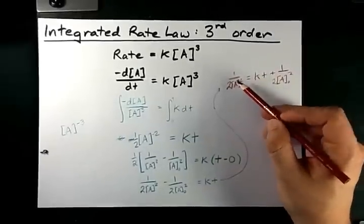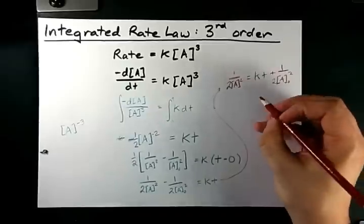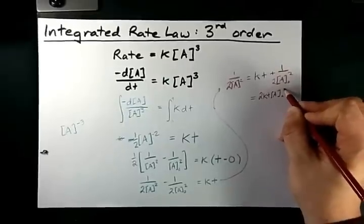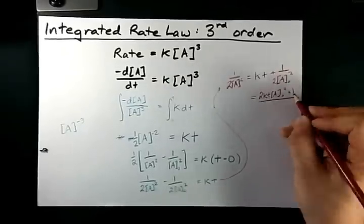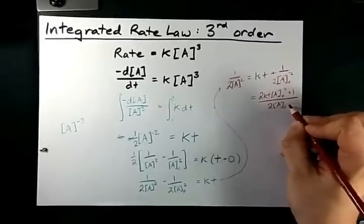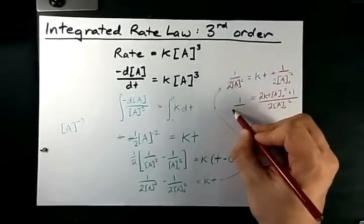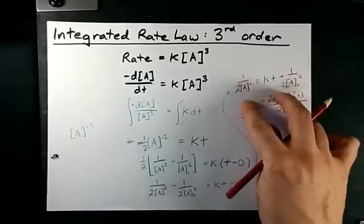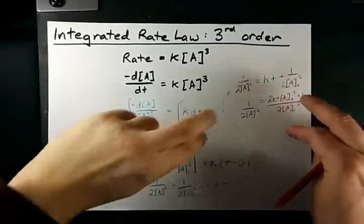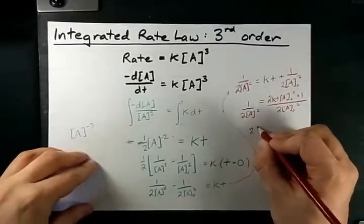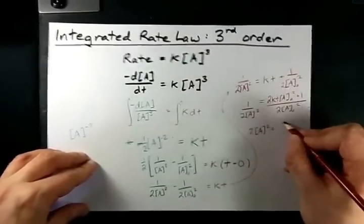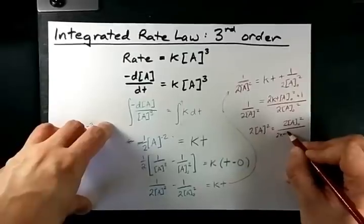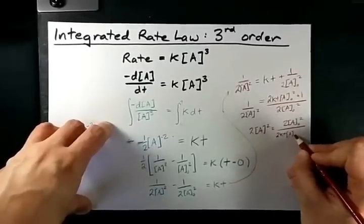And now if I want this concentration in the numerator, I'm going to have to combine this into a common denominator. That's 2kt[A]₀ squared plus 1, all over 2[A]₀ squared. That's still 1 over 2[A] squared. What I'm doing here is I've converted these both into fractions so that I can take the reciprocal of both, which gives me 2[A] squared equals 2[A]₀ squared all over 2kt[A]₀ squared plus 1.